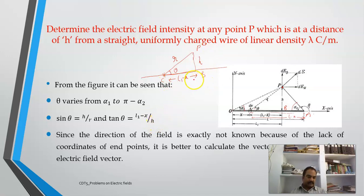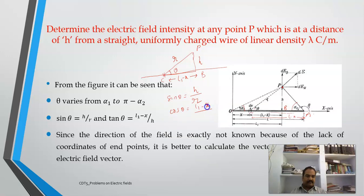In this triangle, sin theta is the opposite side by hypotenuse, cos theta is (l1 minus x) by r, and cot theta is (l1 minus x) by h — that is opposite over adjacent. I will utilize these trigonometric relations.